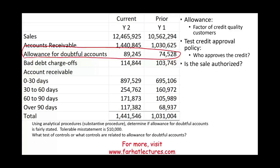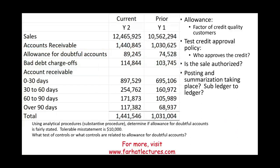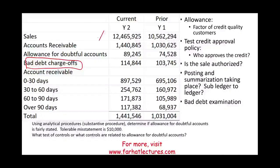Also, the quality of the numbers depends on posting and summarization. Are we posting and summarizing the accounts — posting sub-ledgers to the general ledgers? When we look at accounts receivable and the allowance for doubtful account, are we updating our sub-ledger and then moving this to the general ledger? Are our numbers correct? Bad debt expense is related to allowance, so we also have to examine any internal controls related to bad debt expense, including bad debt charge-offs. Now let's jump to the Excel sheet and run analytical procedures to determine if this account is fairly stated.